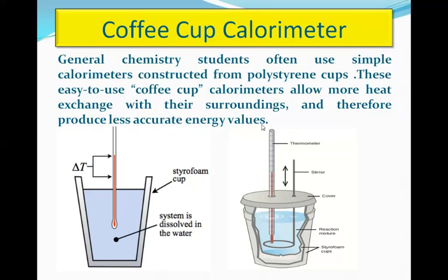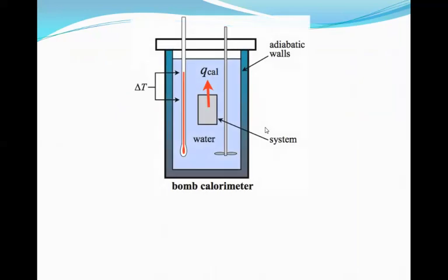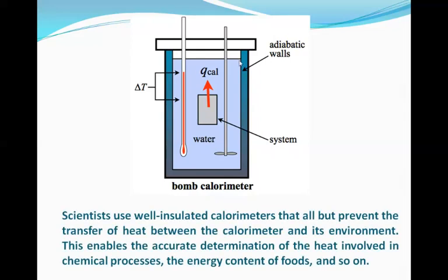These easy-to-use coffee cup calorimeters actually allow more heat exchange with the surrounding and therefore they produce less accurate energy values. The enthalpy of reaction, the internal energy change, or any kind of energy changes taking place during a chemical process can be carried out in an approximate manner using a coffee cup calorimeter. Scientists actually use a much more advanced instrument for measurement of heat exchange, and that is a bomb calorimeter.